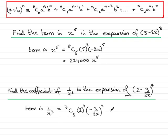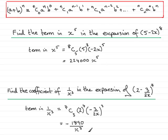So this gives the term in 1 over x cubed. Now 7C3, done on the calculator, turns out to be 35. 2 to the 4 is 16. And minus 3 over 2x, all to the power 3, turns out to be minus 27 over 8x cubed. Multiplying that all together, you'll find you get minus 1,890 over x cubed. Therefore, the coefficient of 1 over x cubed is the number that multiplies 1 over x cubed, which in this particular example is minus 1,890.